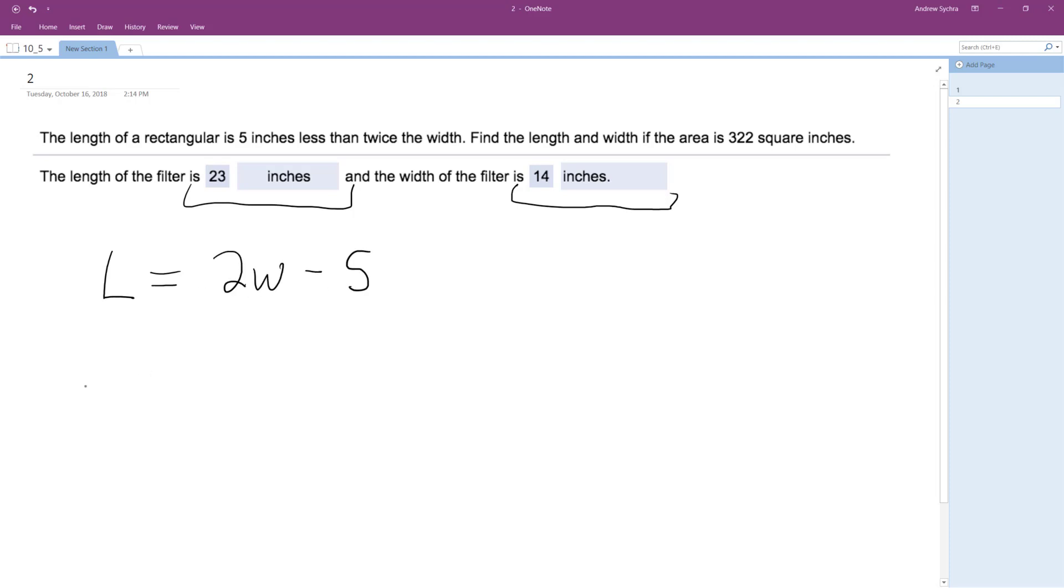So then length times width equals 322, and I can just sub this in for L. So we'll have 2W minus 5 times W is equal to 322.